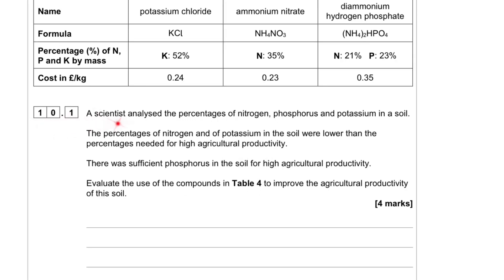Question 10.1. A scientist analyzed the percentages of nitrogen, phosphorus, and potassium in a soil. The percentages of nitrogen and potassium in the soil were lower than the percentages needed for higher agricultural productivity. There was sufficient phosphorus in the soil. Evaluate the use of the compounds in Table 4 to improve the agricultural productivity of this soil.